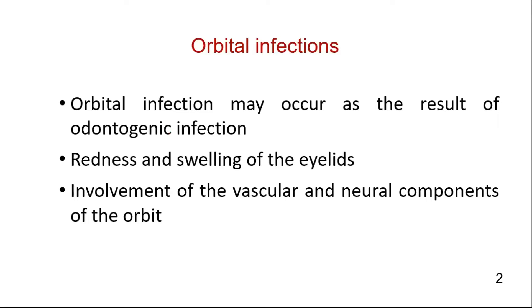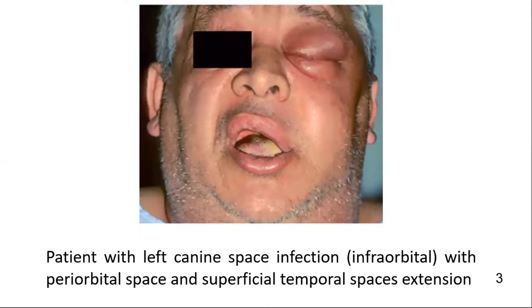Orbital infection may occur as the result of odontogenic infection. Redness and swelling of the eyelids is seen in such patients. The vascular and neural components of the orbit are involved. In this clinical picture, a patient with left canine space infection with periorbital and superficial temporal space extension is seen.